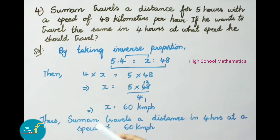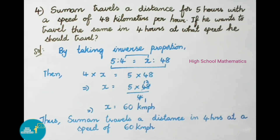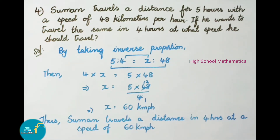Thus Suman travels a distance in 4 hours at a speed of 60 kilometers per hour. Today we have seen chapter 1 ratio and proportion exercise 1.3, questions 1 to 4. In our next video we shall see the remaining sums of this exercise.